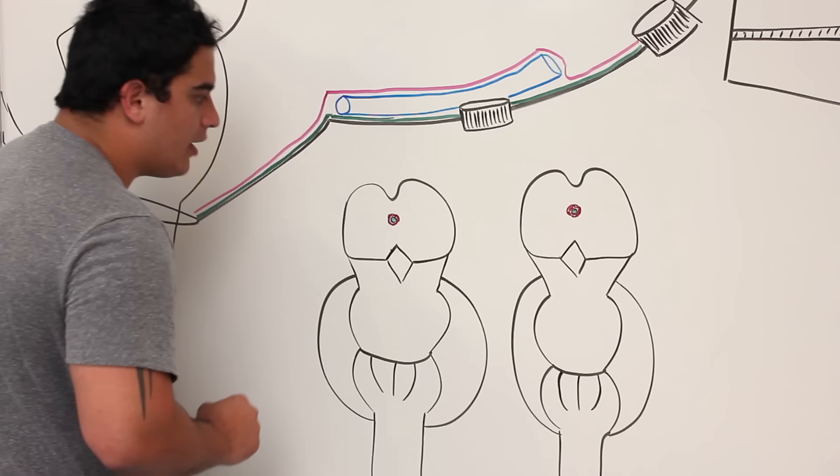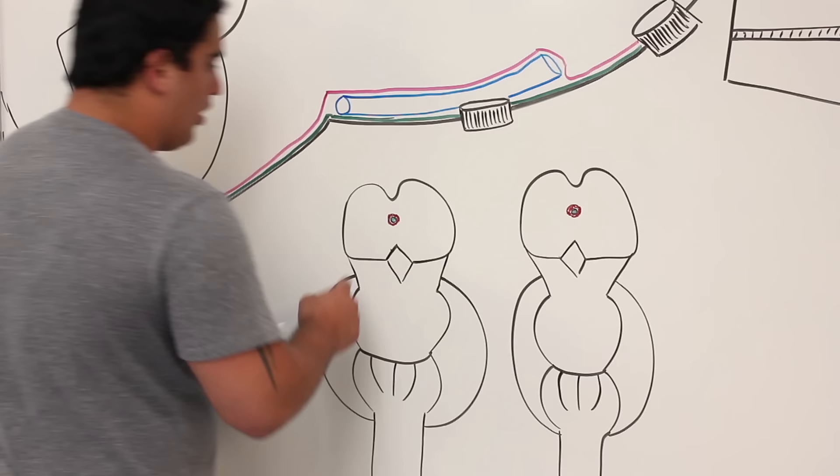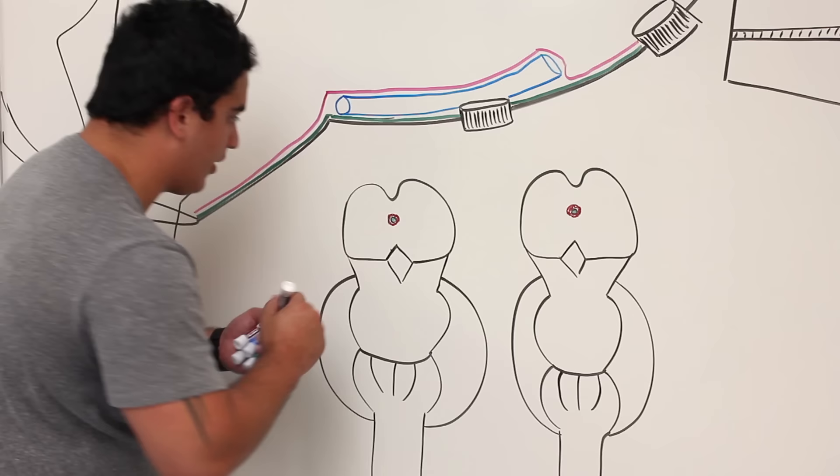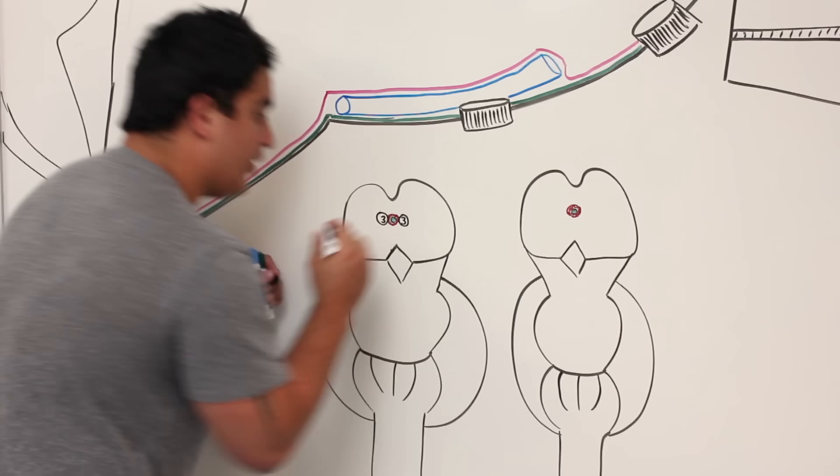Surrounding the cerebral aqueduct is the periaqueductal gray matter, shown here in red, which is very important for certain autonomic functions. On the sides of the periaqueductal gray matter is the nucleus of the third cranial nerve.